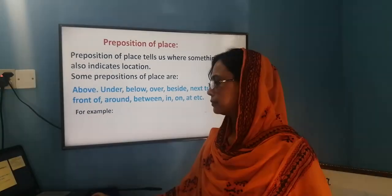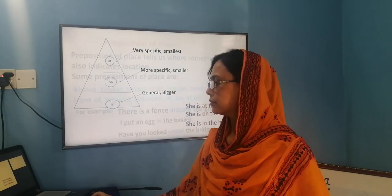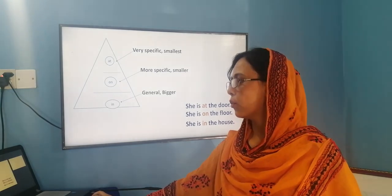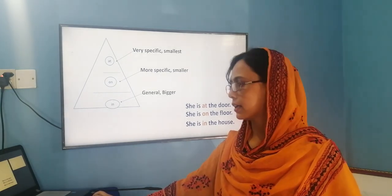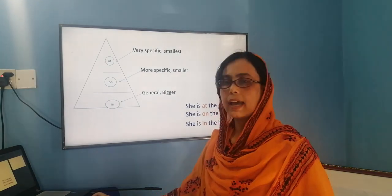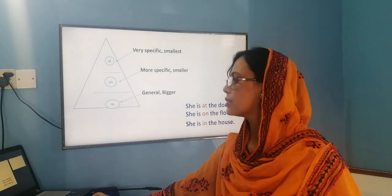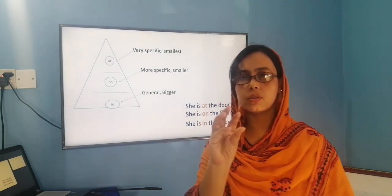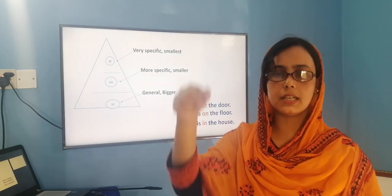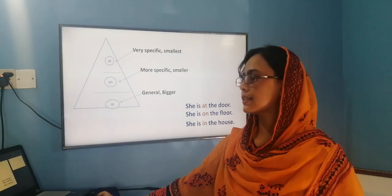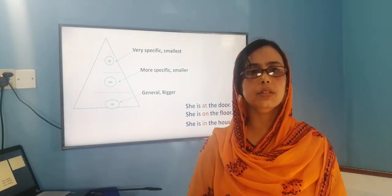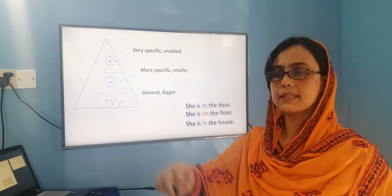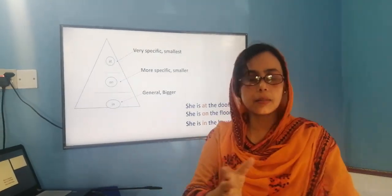Let's look at the uses of 'at' for a specific point or place. 'At' is used when we talk about a very specific location. For example, if a person is standing at the top of the stairs, we say 'at the top of the stairs.' If the location is at the bottom, we say 'at the bottom of the stairs.' Where is the girl? The girl is at the window — because we are talking about a specific point or location.